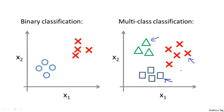We already know how to do binary classification. Using logistic regression, we know how to maybe fit a straight line to separate the positive and negative classes. Using an idea called one versus all classification, we can then take this and make it work for multiclass classification as well.